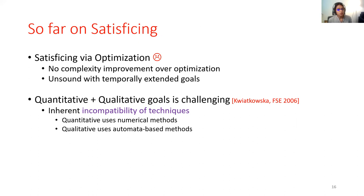In fact, this hints at one of the most commonly appearing issues in combining quantitative and qualitative goals, and that is of incompatibility of techniques. Oftentimes, quantitative goals use techniques such as numerical methods, while qualitative goals use techniques such as automata-based methods. And they're so unlike each other that the resulting algorithms end up having poor guarantees.